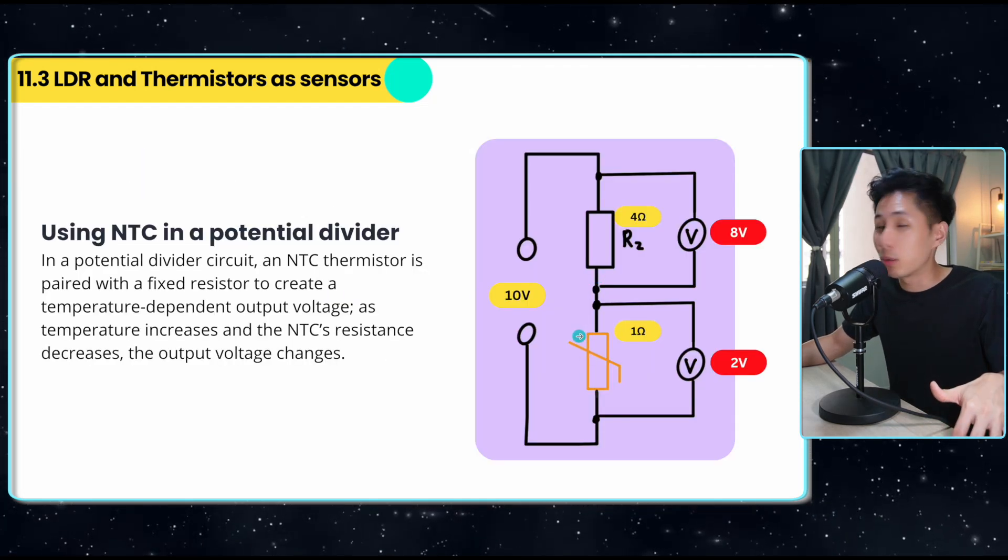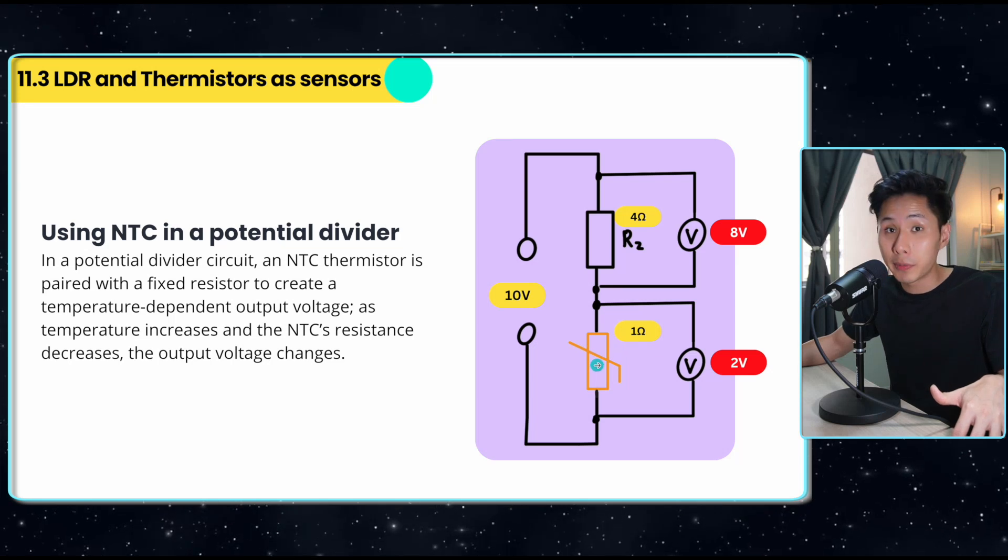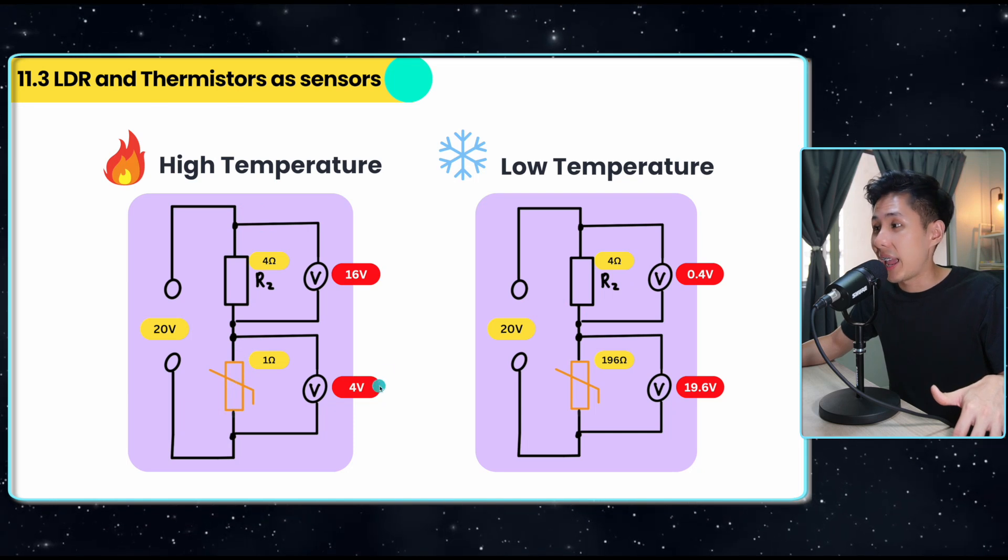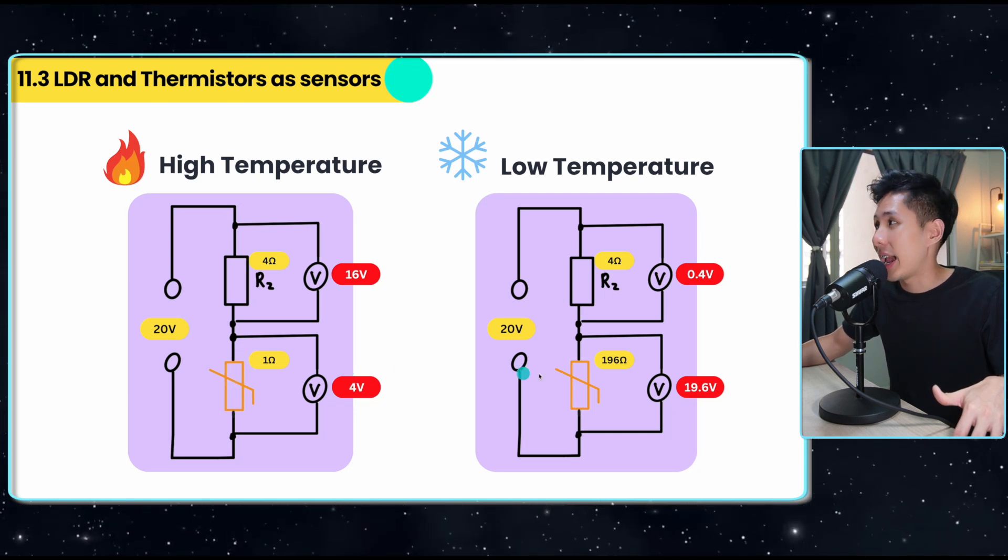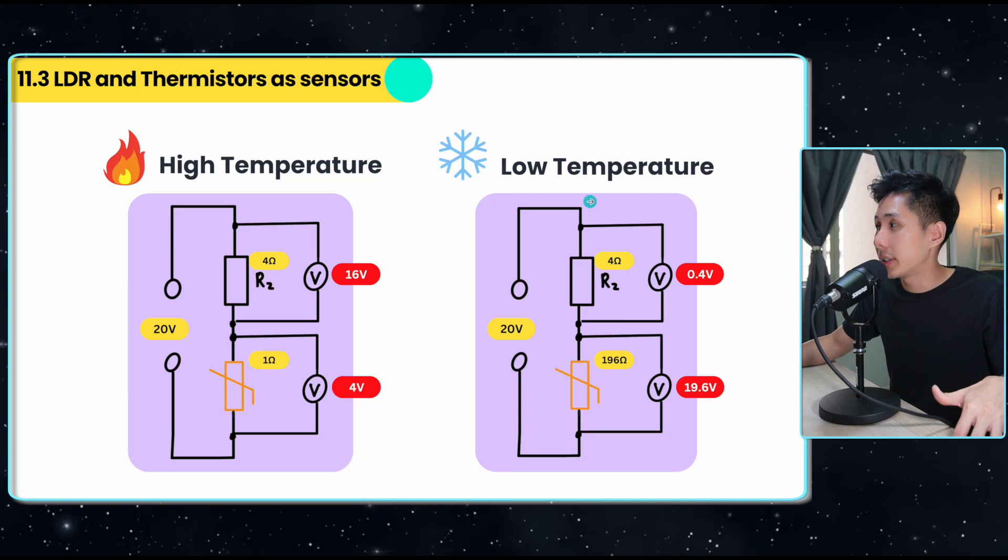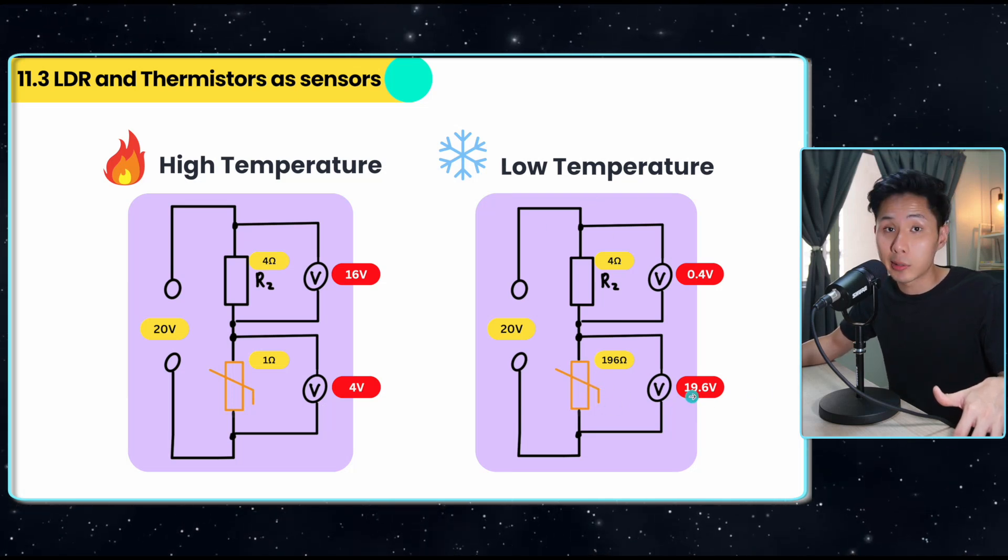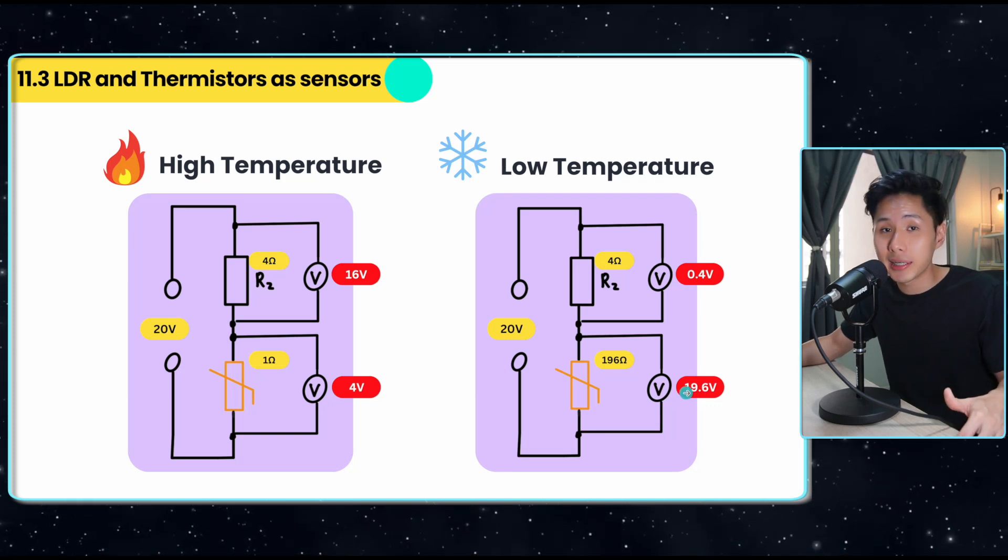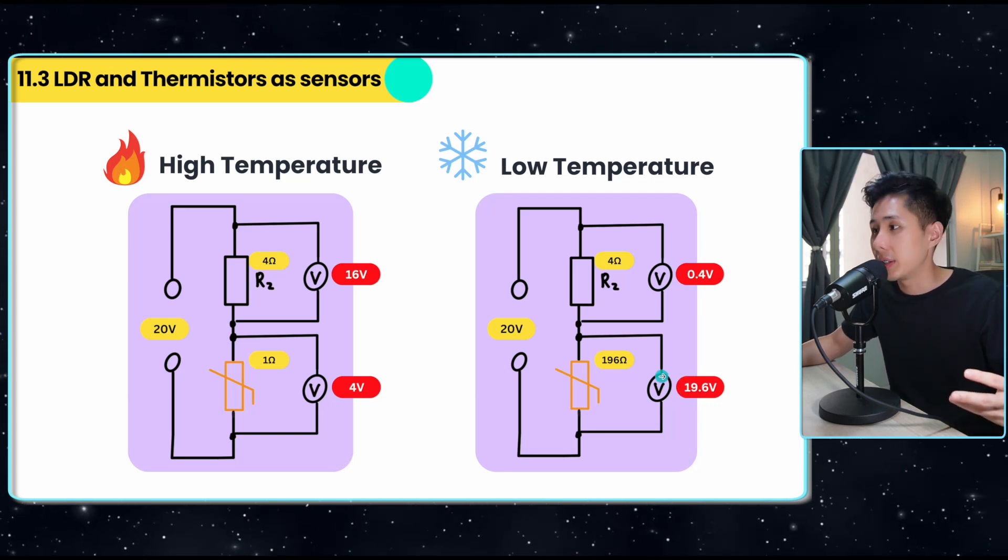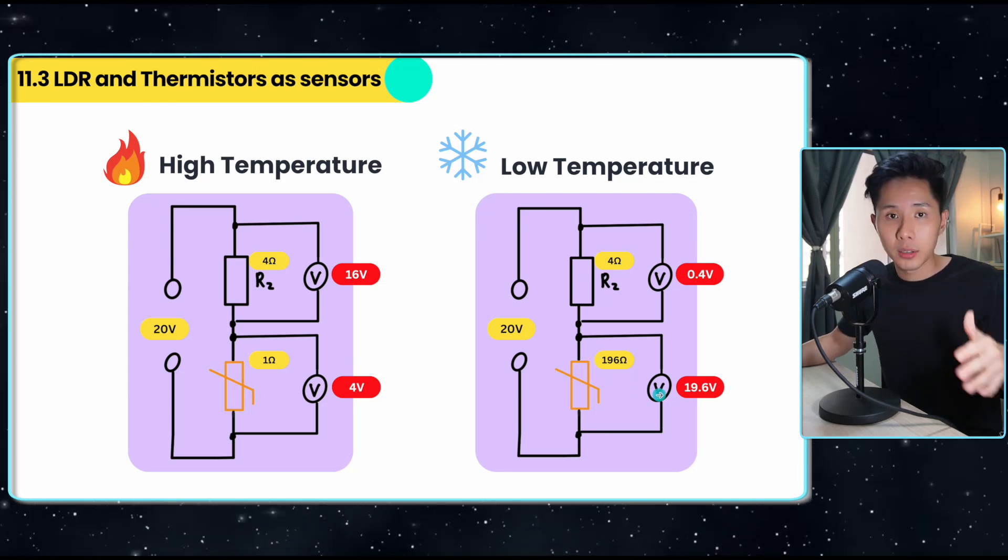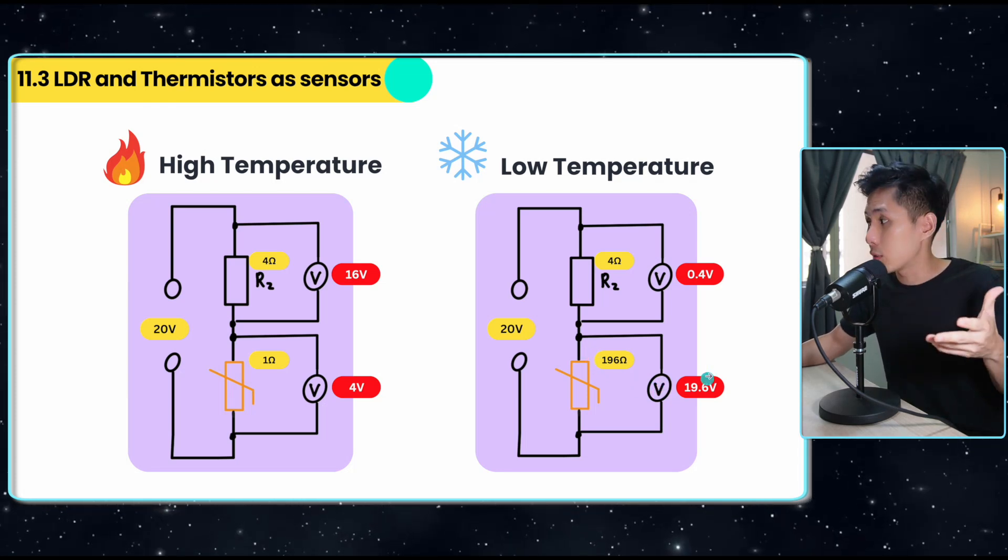Using NTC in a potential divider can also be useful. For example, in a high temperature environment, the resistance is very low and therefore voltage changes here. In contrast, when the temperature is very low, the resistance is high, the voltage is also high. But you can customize the circuit to do whatever you want. What I'm trying to bring out here is that when using thermistor and LDR in a potential divider, you can essentially change voltage values across each resistance.